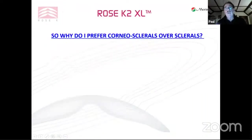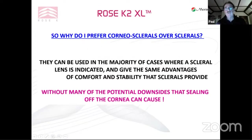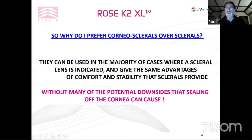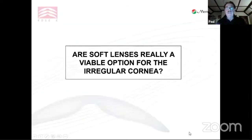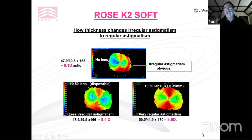Advantages of corneal sclerals continue: no conjunctival prolapse or corneal bogging. Midday fogging is less common than with scleral lenses, so you don't have to refill as frequently. They don't need to be as large as sclerals — because you're landing on the cornea, not soft conjunctiva, which requires a bigger support area. They're also easier to remove. In summary, I prefer corneal sclerals over sclerals because they can be used in the majority of cases where a scleral is indicated, giving the same advantages of comfort and stability without many of the potential downsides.